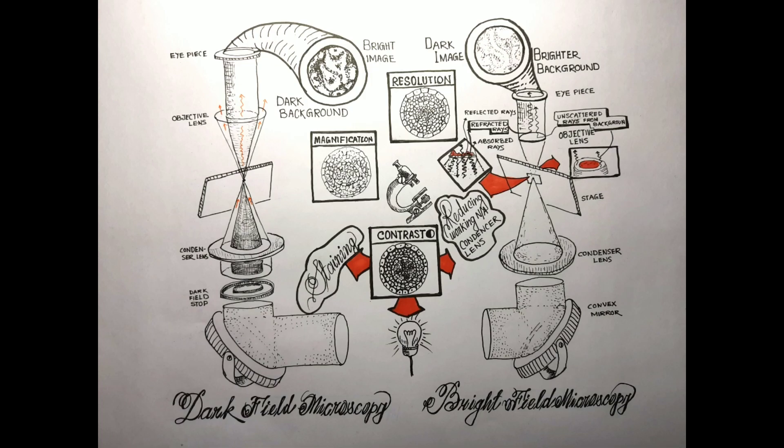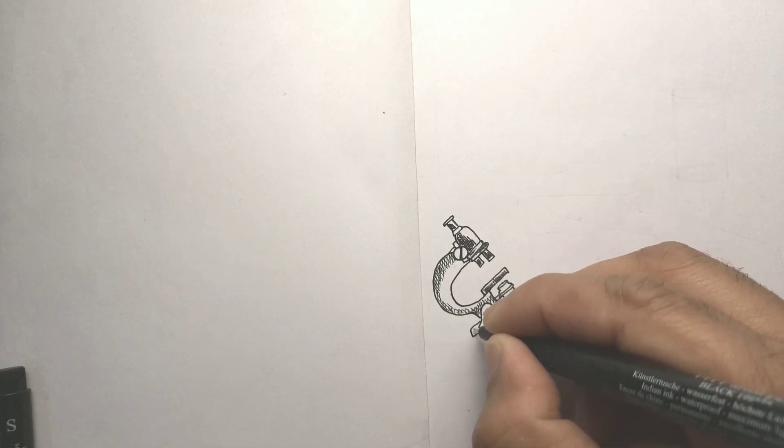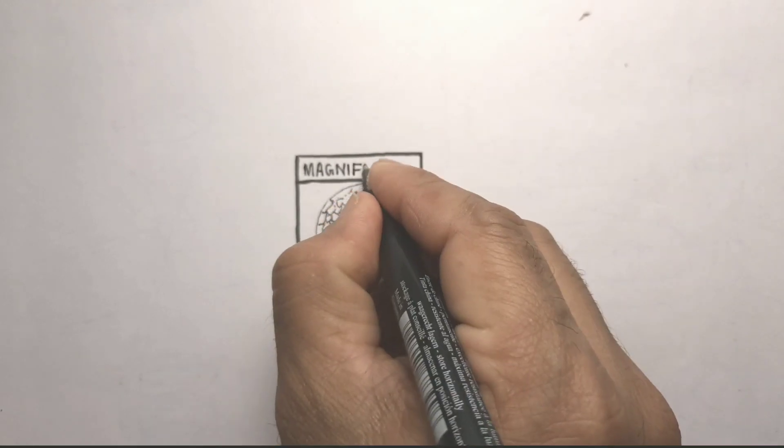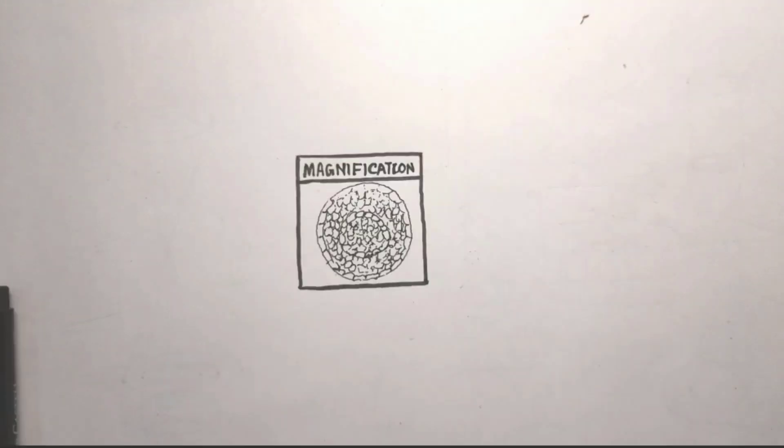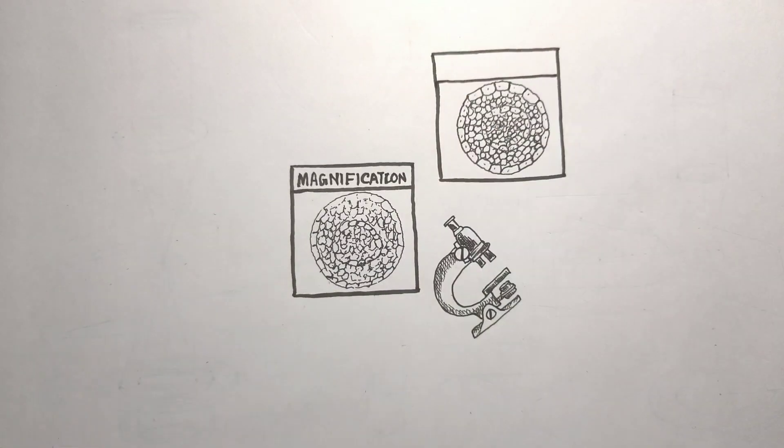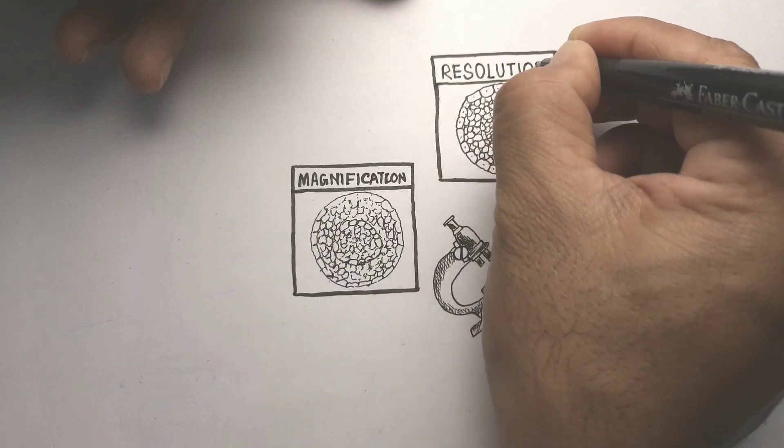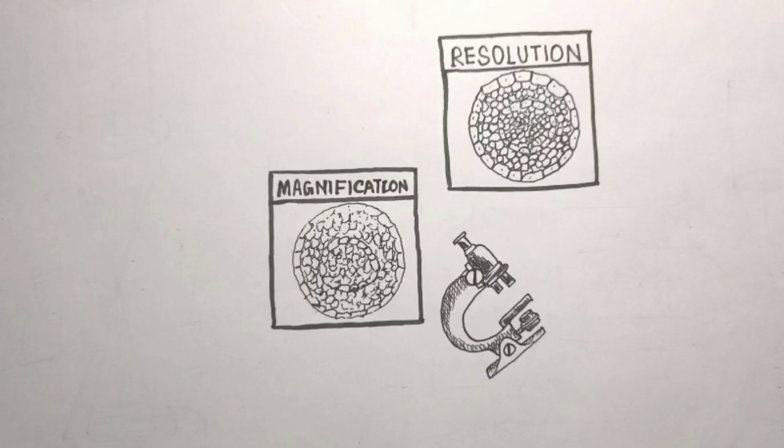We all know the two main advantages of using a microscope. The first is magnification power, or the microscope's ability to produce an enlarged image of tiny samples. The second, equally important, is the resolving power of the microscope, or its ability to make the finer details of the sample observable.